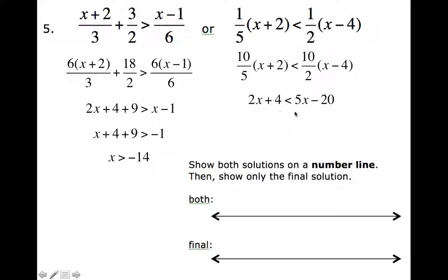Now I'm going to subtract 2x from both sides. Alright, left with this. Now I'm going to add 20 here, add 20 here. So 24 is less than 3x. Divide by 3 on both sides. x is greater than 8.